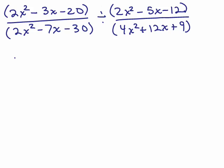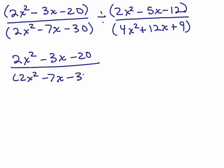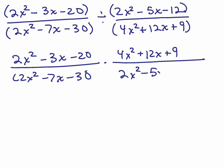So first, I'm going to write (2x² - 3x - 20)/(2x² - 7x - 30) times the reciprocal, (4x² + 12x + 9)/(2x² - 5x - 12). All right, so step one, multiply by the reciprocal. Next step is to factor all of these. Now these don't look too bad.